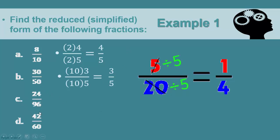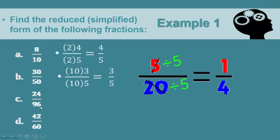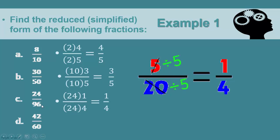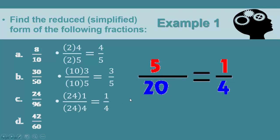In example C, twenty-four can go into itself and into ninety-six. Twenty-four divides into itself once, and twenty-four goes into ninety-six four times. So we factor out twenty-four to get twenty-four times one on top and twenty-four times four on the bottom. We cancel out the twenty-fours and get one quarter.